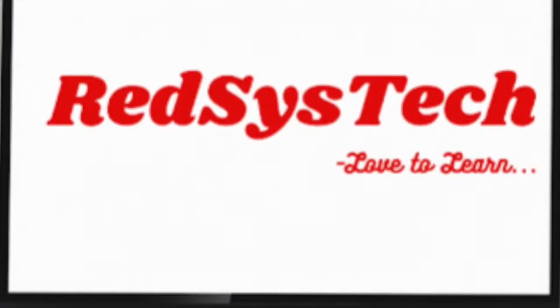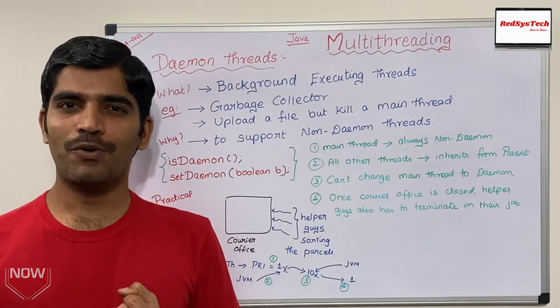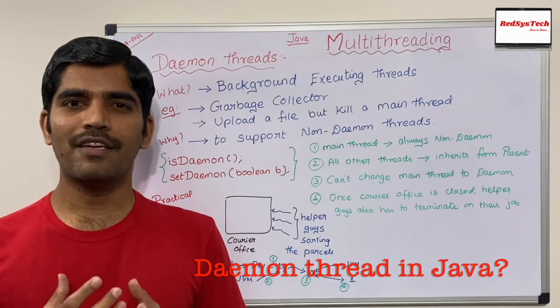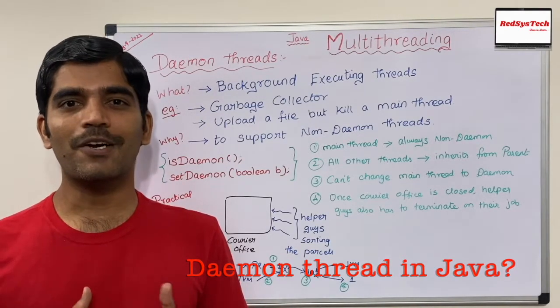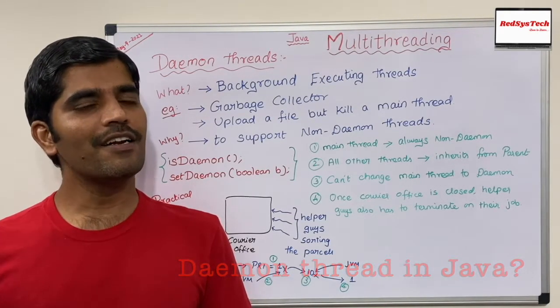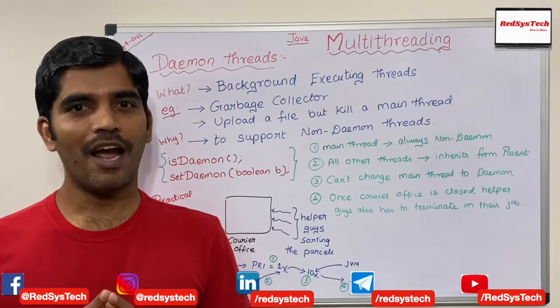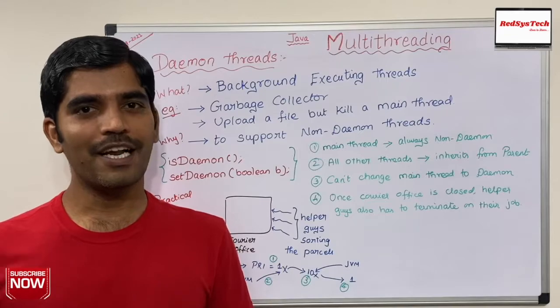I will also go through real-time programming so you guys will understand where we actually use multi-threading in our real-time programs at the client side. In this video, we are going to learn about what is a daemon thread in Java, what is the role of a daemon thread, how to check whether a given thread is a daemon or not, and how to make a thread a daemon thread. I will also demonstrate this concept with a user story, go through some key concepts, and write a program. Without any further delay, let's get started.